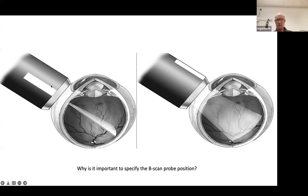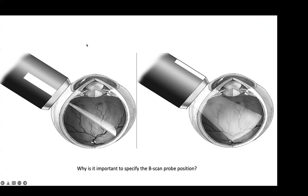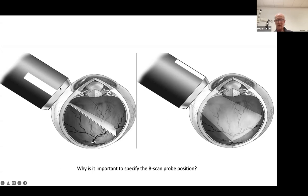So this probe position here on the left — there are two major positions that I use: transverse and longitudinal. Which one would this be? The marker's here and the probe is placed here against the eye. Right, that's transverse. And this is longitudinal.